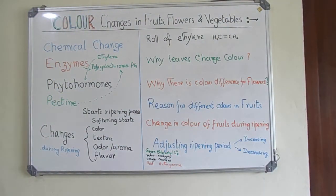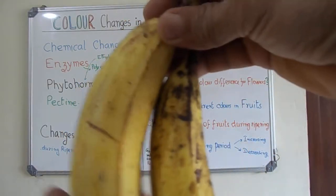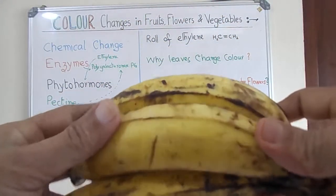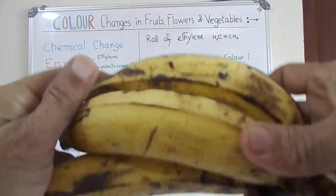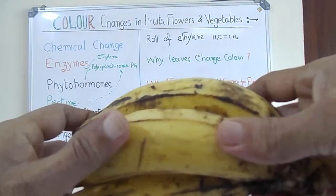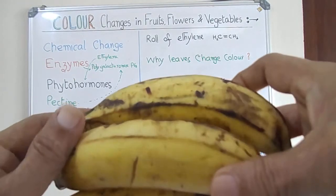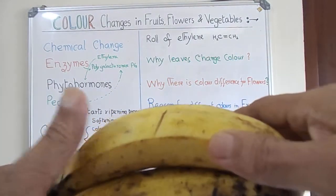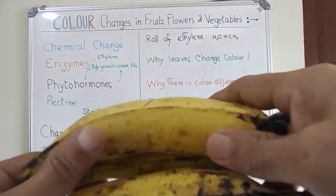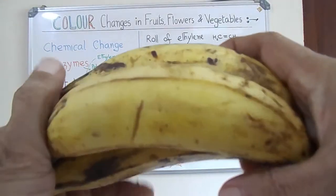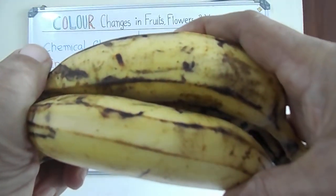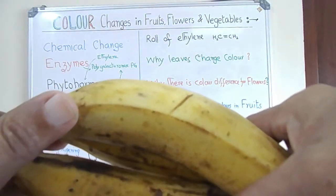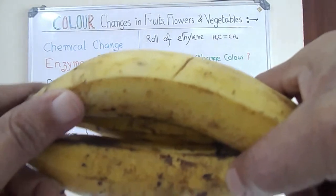Another example is a banana. Banana, as you know, was a green color two or three days back. Now it is ripened and converted to fruit. Three or four days back it was not at all sweet, but now it has become sweet also. I am explaining the chemical reason for this.